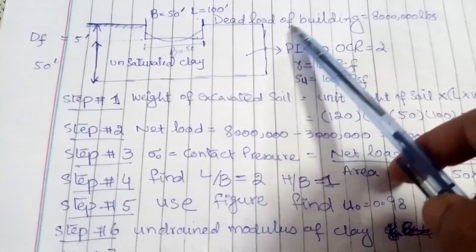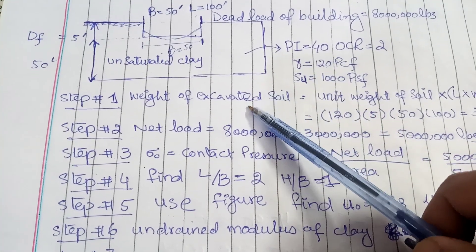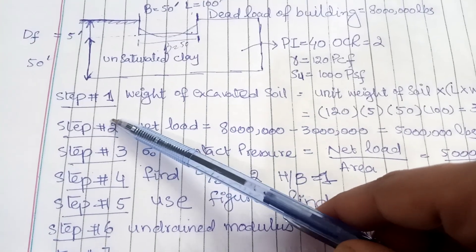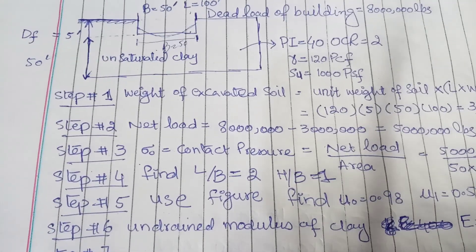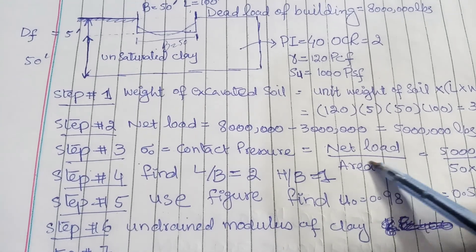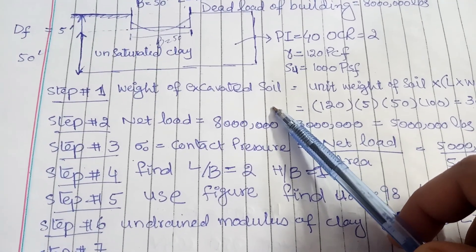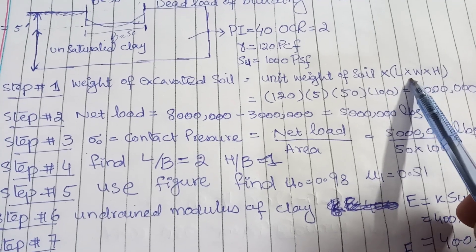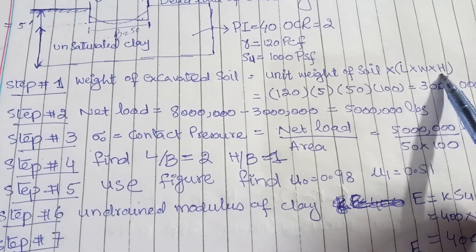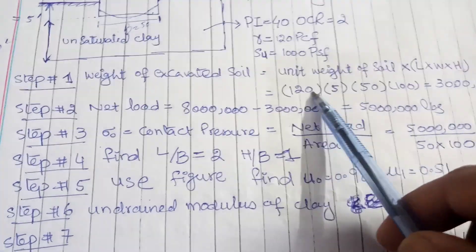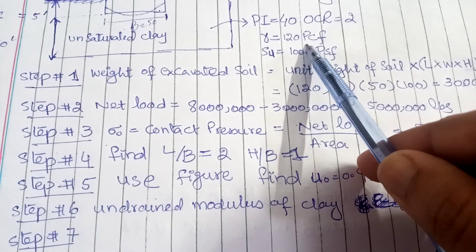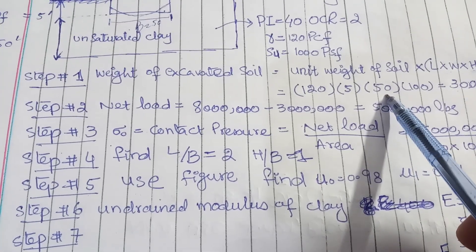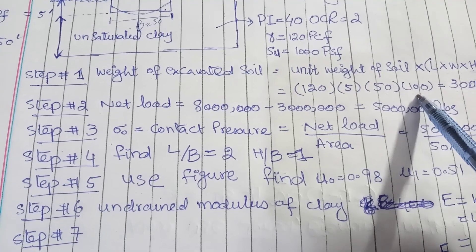With this data we will start our procedure to calculate immediate settlement of a foundation. Step number 1: we need to calculate weight of excavated soil. How we can calculate weight of excavated soil: unit weight of soil multiply length of foundation, width of foundation, and height. Here height is the depth of foundation. So unit weight is given in the data, this is 120 PCF, multiply 5, which is the depth of foundation, 50 is the width of foundation, and 100 is the length of foundation. So weight of excavated soil is equal to 300,000 pounds.